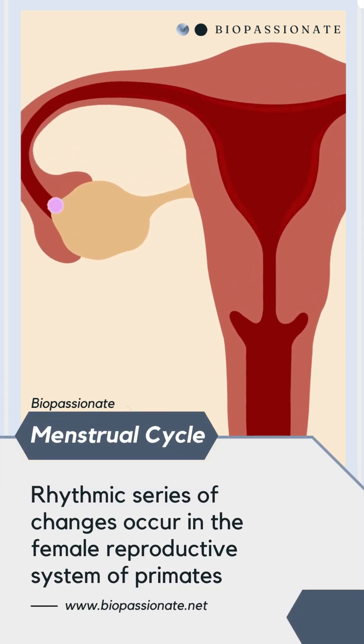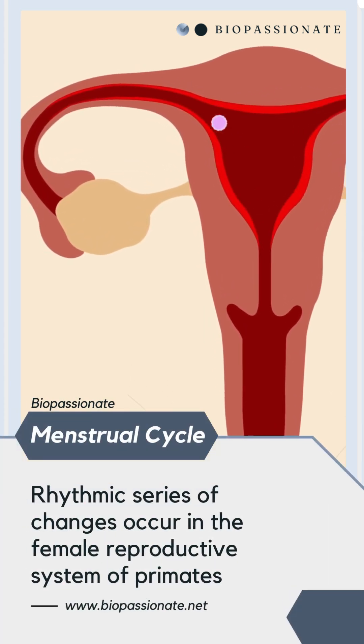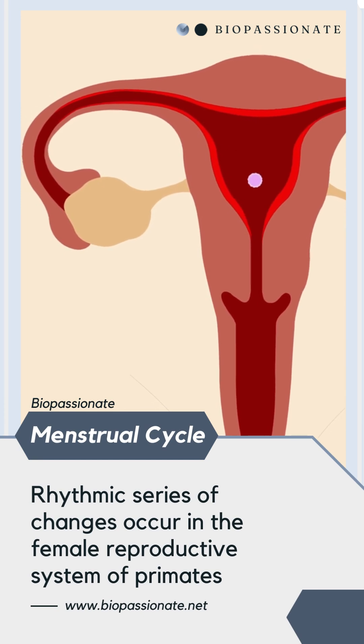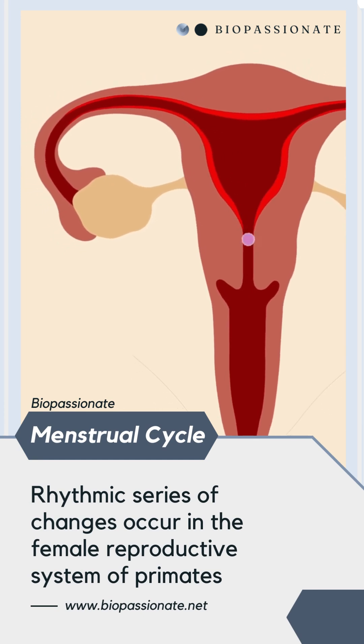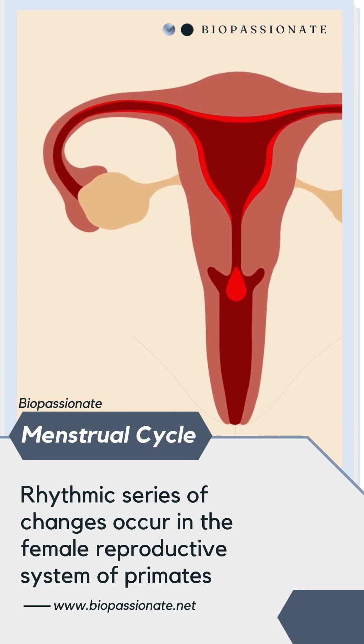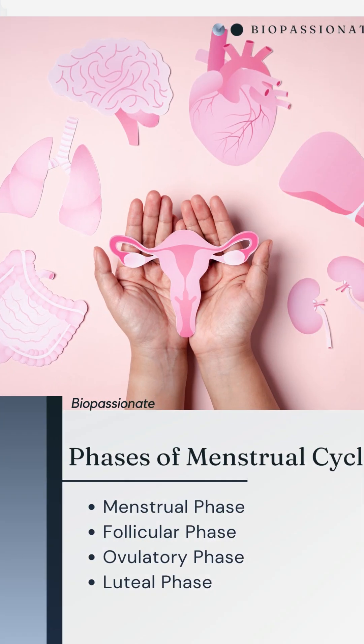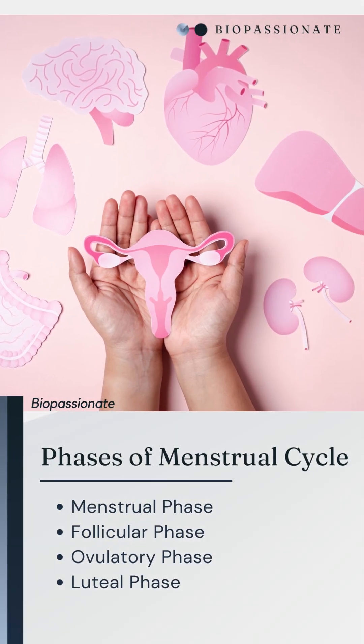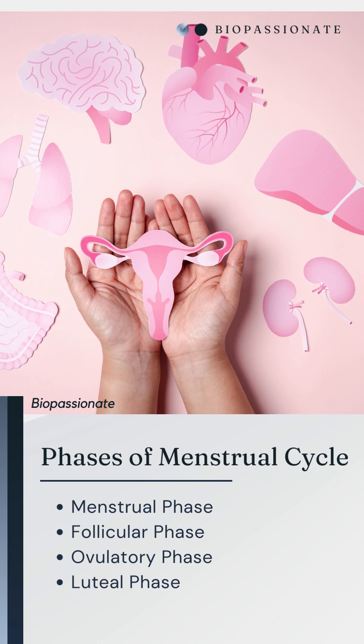Menstrual cycle. There is a mixed series of changes that occurs in the female reproductive system of primates. The menstrual cycle has four phases: menstrual, follicular, ovulatory, and luteal phase.